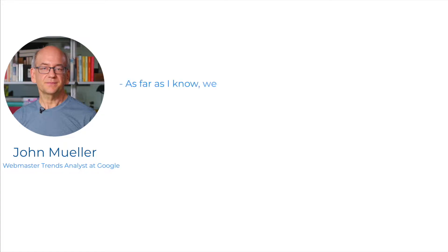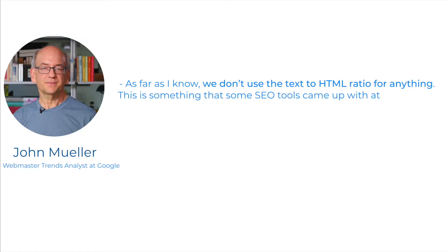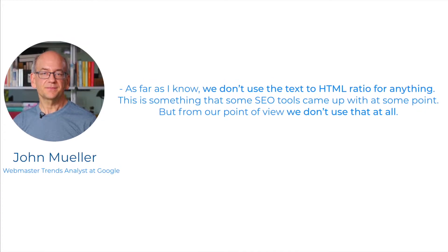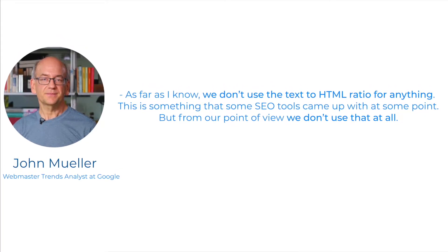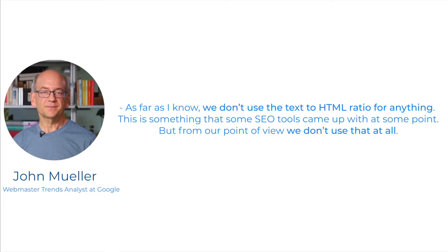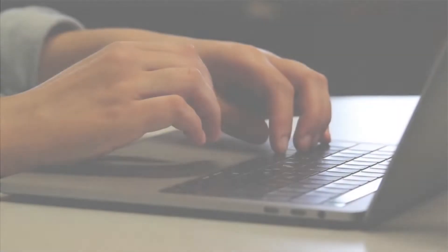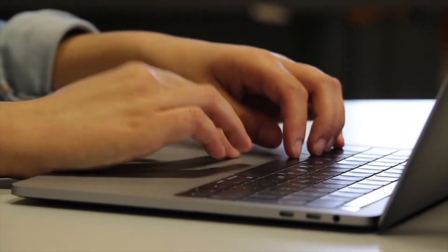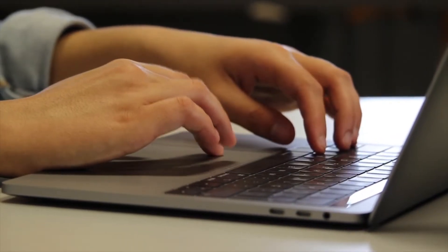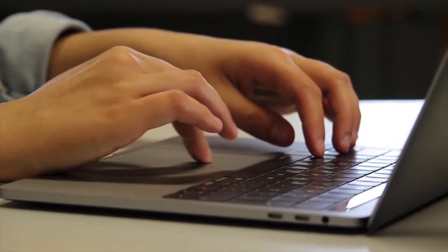In one interview, John Mueller, a Google employee, said: "As far as I know, we don't use a text-to-HTML ratio for anything. This is something that some SEO tools came up with at some point, but from our point of view we don't use it at all." Despite this being an indirect Google ranking factor, it is not recommended to pump up HTML code relative to the useful content on a page.